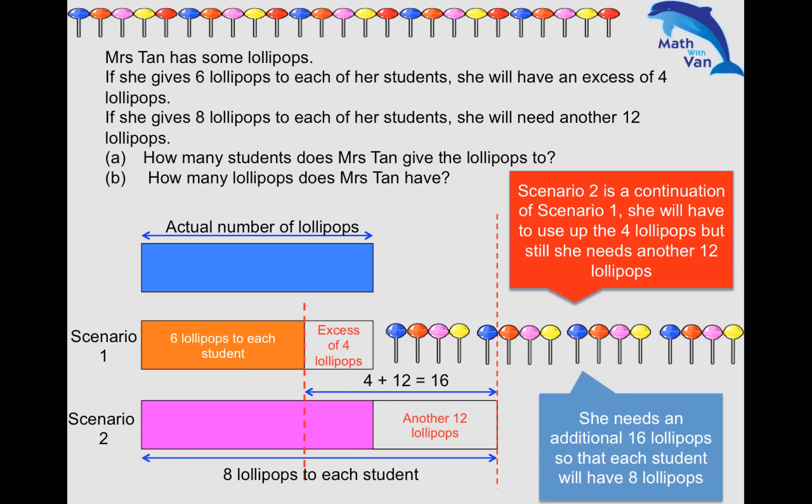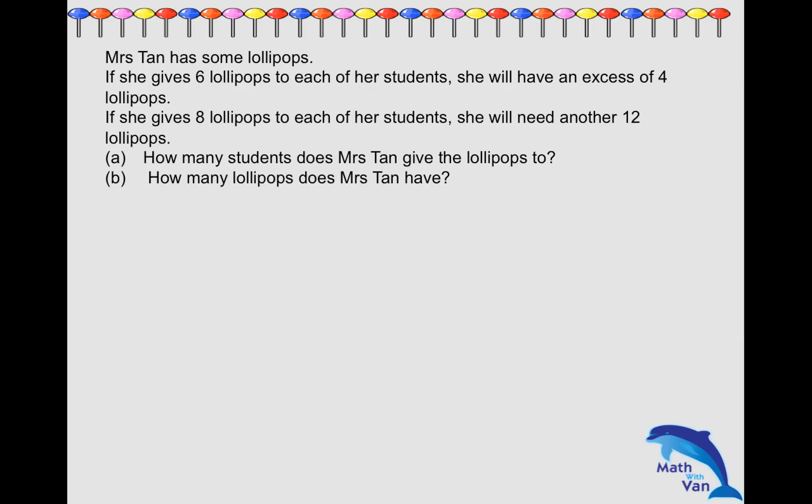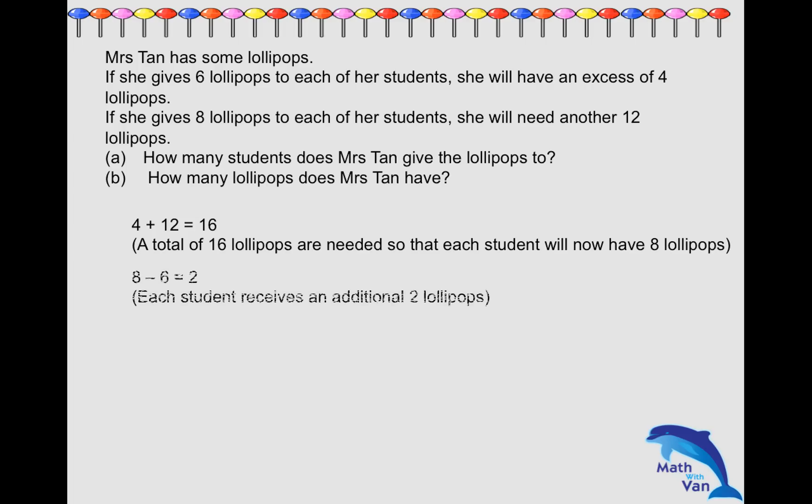Once you understood this part - sixteen, a total of sixteen lollipops is needed - the next thing is what is the difference, what is the increment in the number of lollipops that each student has? So from six to eight is actually a difference of two, or two more.